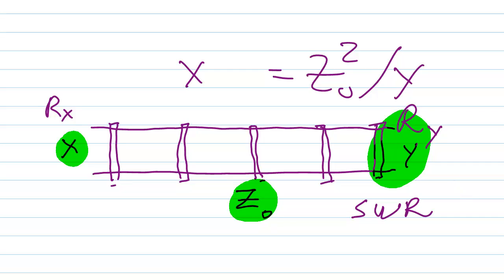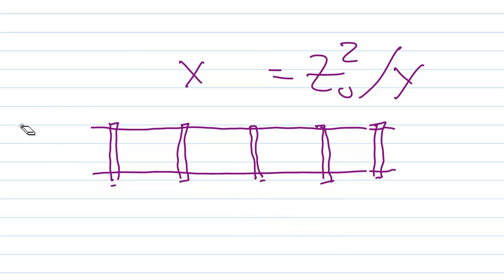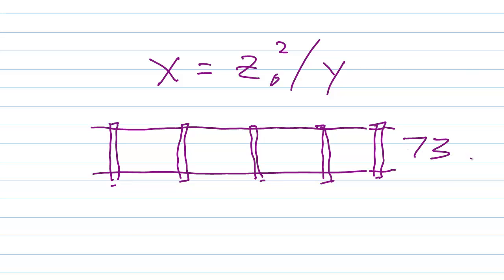So let's just suppose that you connect this thing to a dipole antenna. The output goes to a dipole antenna. X equals Z sub naught squared over Y. Well suppose that this impedance here is 73 ohms, that is a half wave dipole. You want to know what X is going to be. You are using 450 ohm ladder line.